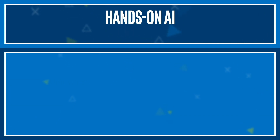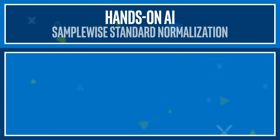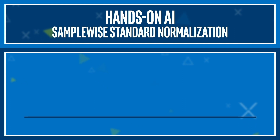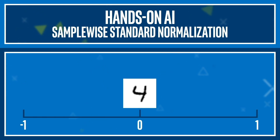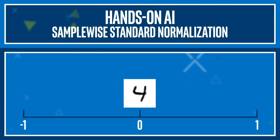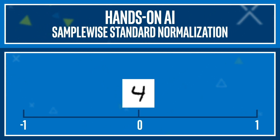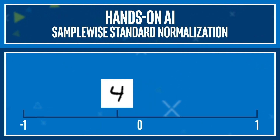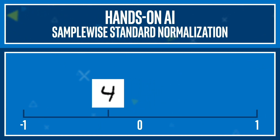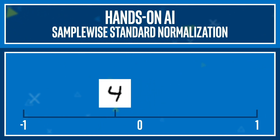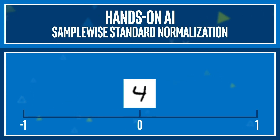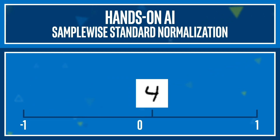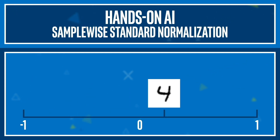In conjunction with sample-wise centering, you can use sample-wise standard normalization. This preprocessing step follows the same idea of sample-wise centering, but instead of setting the mean value to 0, it sets the standard deviation value to 1. So now instead of having these values range from 0 to 255, they range from negative 1 to 1.